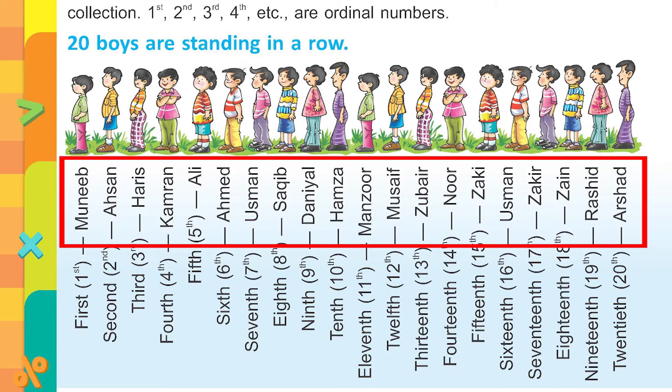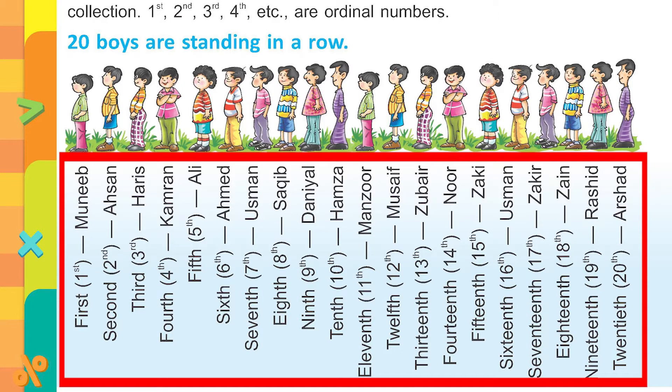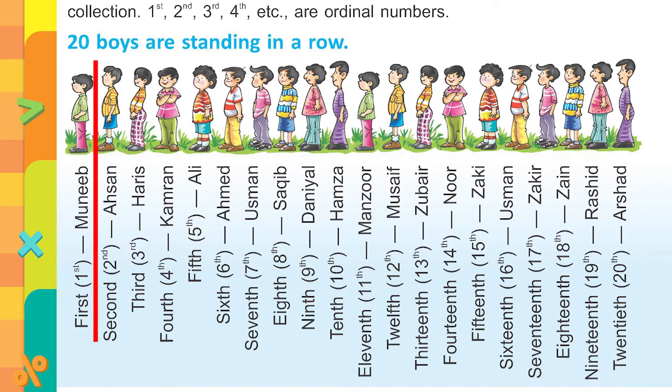Muneeb, Ehsan, Haris, Kamran. So to find out the position of these boys, can you tell me the position of Muneeb, where is he standing? Starting from your left side, your left hand, Muneeb is standing on the 1st position. Yes, can you tell me where Saqib is standing? Saqib is standing at the 8th position. Brilliant. Now where is Noor standing? He is standing at 14th position. Can you tell me the position of Zain? Yes, he is standing at the 18th position. Position of Ashid is 20th. Now by looking at their positions and names, you can find out the exact location where they are standing.